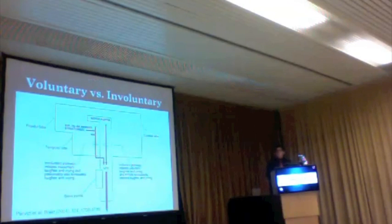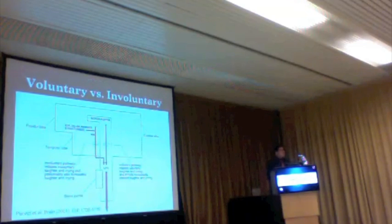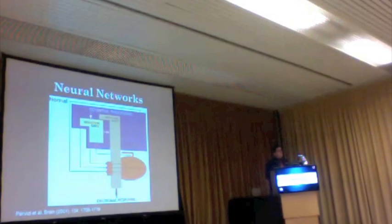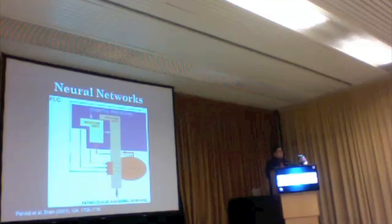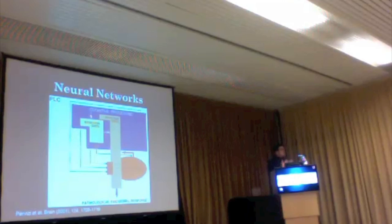How do we understand pseudobulbar affect? Previously, it was understood through voluntary corticobulbar tracks and involuntary tracks for crying and laughing, with a laughing and crying center in the brain stem. That has changed; we now think more about neural networks — from the frontal lobe down through cerebellar connections, with emotional input from the limbic system. In a normal person, you integrate sensation: you feel something and then express it. With PBA, there is dysregulation from a cerebellar point of view — the person cannot integrate external events with internal feelings.